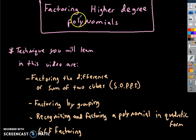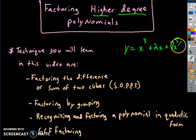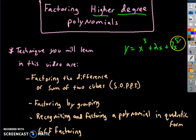The first thing to understand is that it says 'higher degree polynomials.' The degree of a polynomial is the highest exponent. For example, if the highest exponent on variable X is 5, then the degree of that polynomial is degree 5.